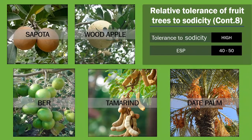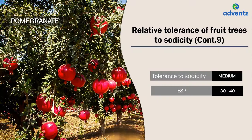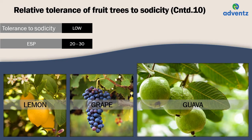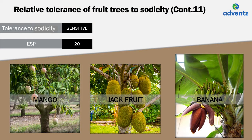Regarding relative tolerance of trees to sodicity: ber, tamarind, sapota, wood apple, and date palm have the highest tolerance of ESP 40–50. Pomegranate has medium tolerance with an ESP range of 30–40. Guava, lemon, and grape have low tolerance with ESP range 20–30. And mango, jackfruit, and banana are sensitive to sodicity with an ESP of 20.